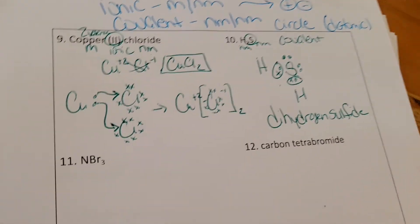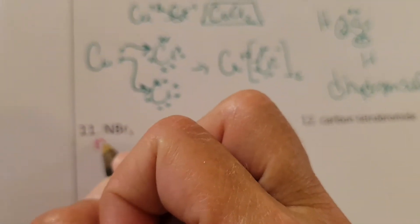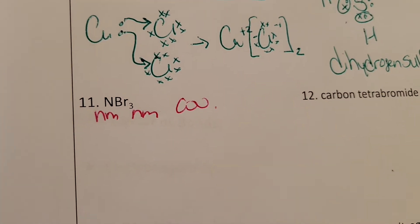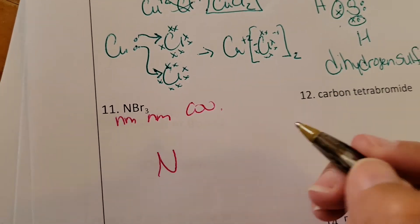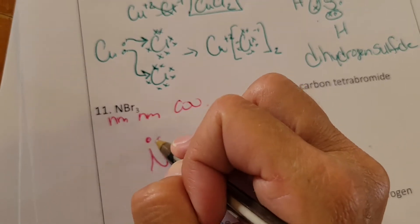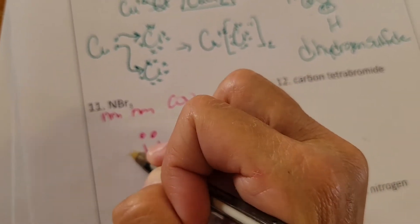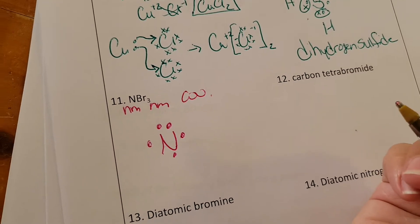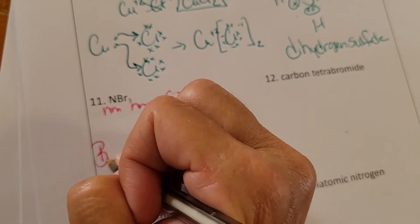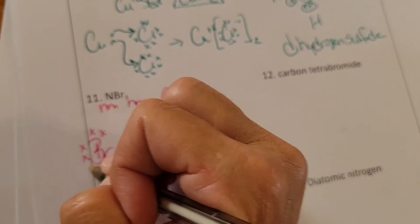All right, next one. NBr3, non-metal, non-metal covalent. Nitrogen has one, two, three, four, five. We know we need three bromines. Bromine has seven: one, two, three, four, five, six, seven. Share.